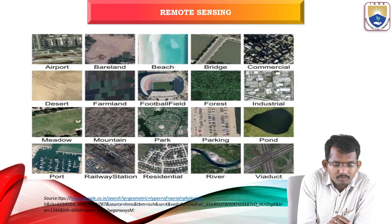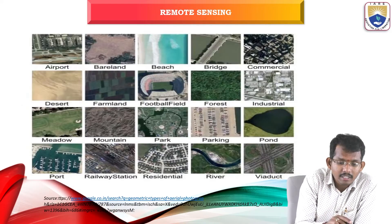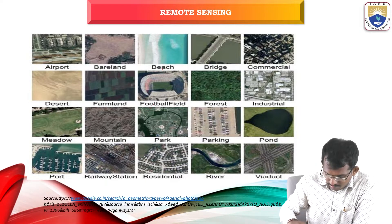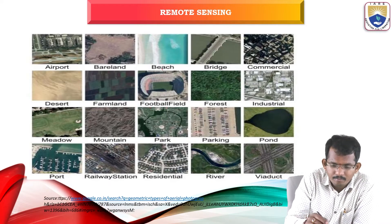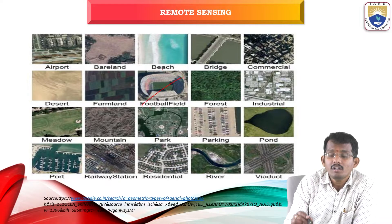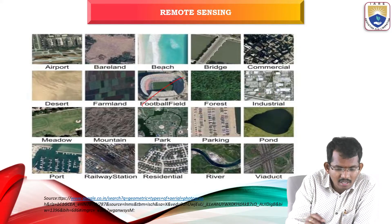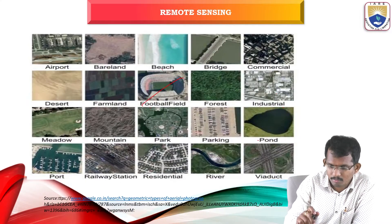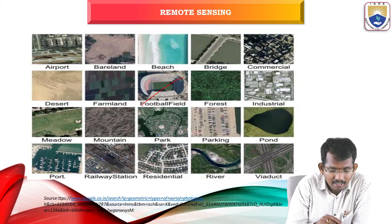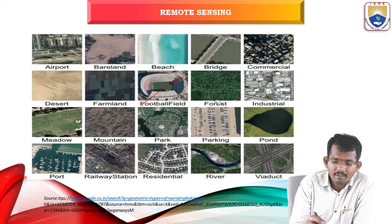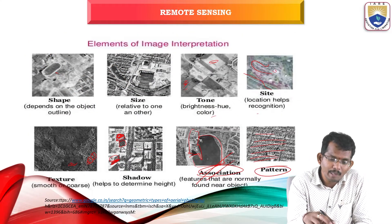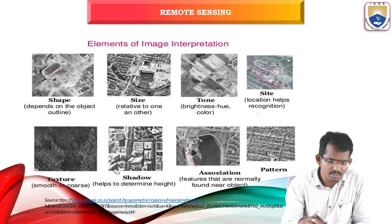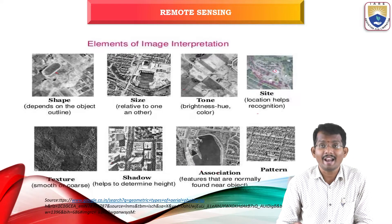You can see an example here — an airport. With these elements, we can extract and identify images such as airport, bare land, beach, bridge, commercial areas, desert, farmlands, football field, forest, industrial areas — based upon association and site — meadows, mountain, park, parking, pond with water body, port, railway station, residential, river, and viaduct. These various elements are used to analyze and identify objects in an image.